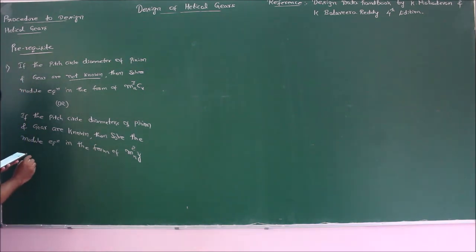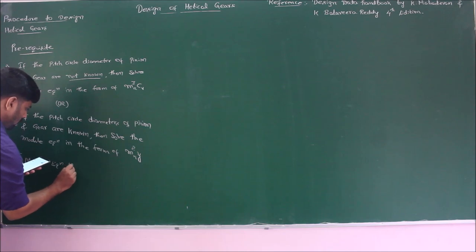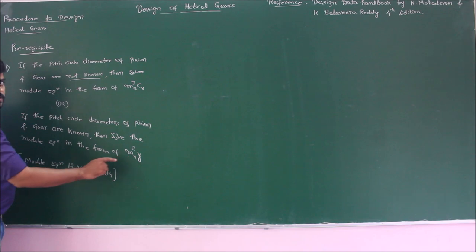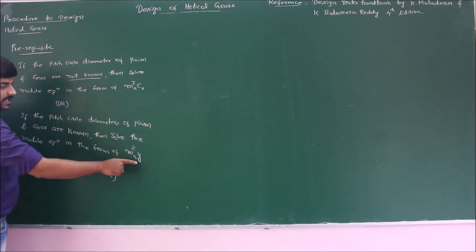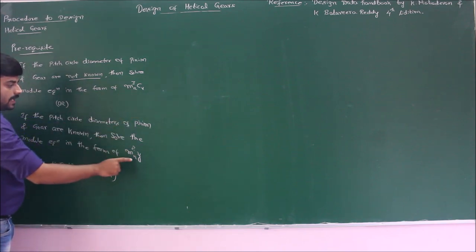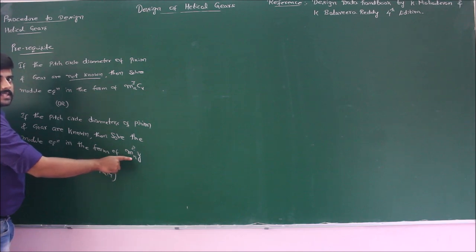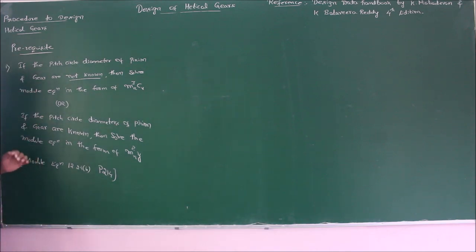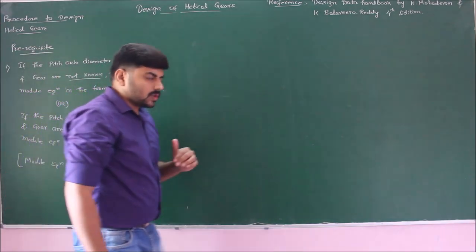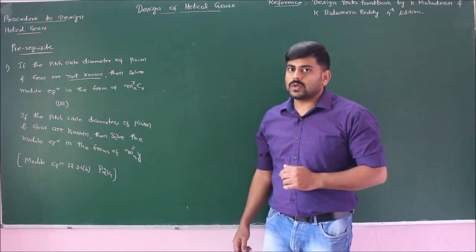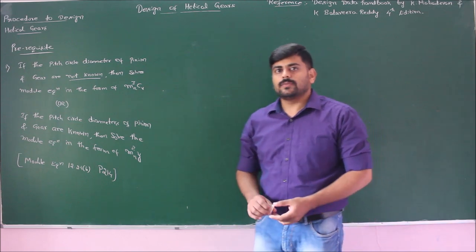Or, if the pitch circle diameter of pinion and gear are known to us or given, then solve the module equation in the form of mn²·Y. From the design data book, the module equation is given by equation number 12.24b, page number 214, where mn stands for normal module and Y stands for Lewis's form factor. Let us take mn³·Cv as type 1 problems, and mn²·Y as type 2 problems, same as what we discussed in design of spur gears. You should decide what form of module equation to be used.